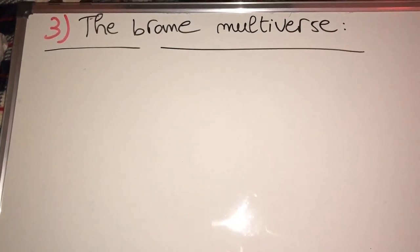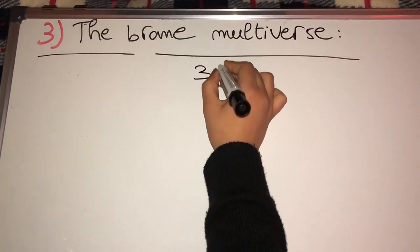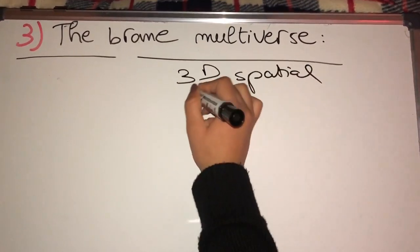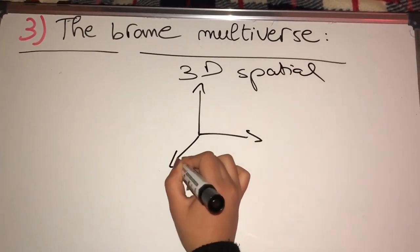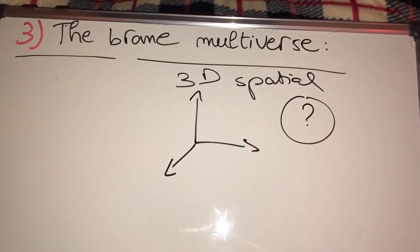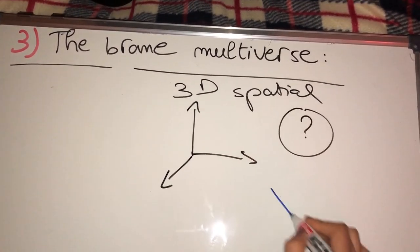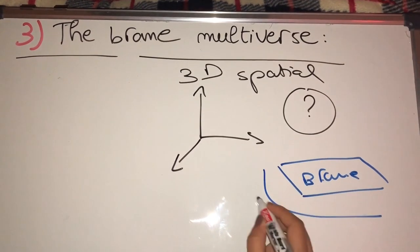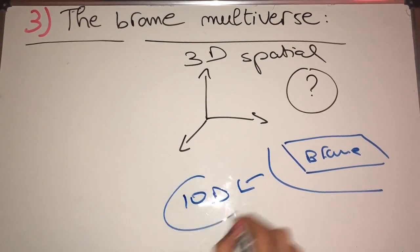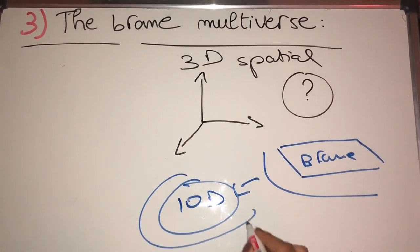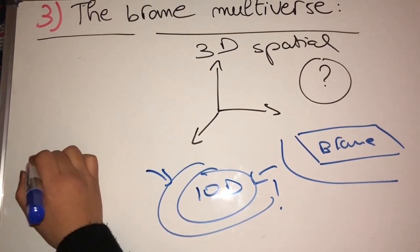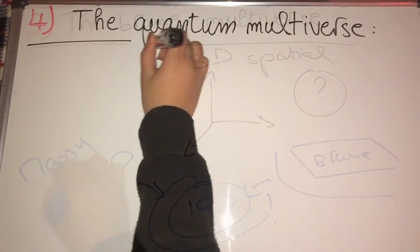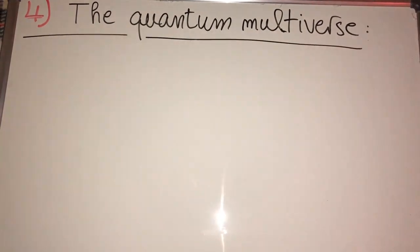Third, the brane multiverse. We know that we live in three spatial dimensions: up to down, side to side, and back to front. But are there more dimensions? In this theory, our 3D universe lives on a membrane that is itself in ten dimensions, and there could be other branes with other universes.